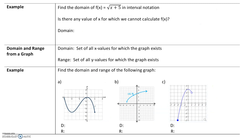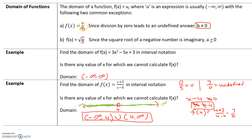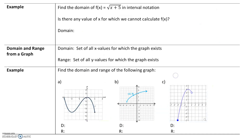Here's another example. Find the domain of f(x) equals the square root of x plus 5. We ask ourselves: does this contain a fraction? No. Does it contain a square root? Yes, so there is going to be some restriction. The expression has to be greater than or equal to 0. For example, if x were negative 6, we'd get the square root of negative 6 plus 5, which is the square root of negative 1 — that's imaginary, and we can't evaluate that in a real number system.